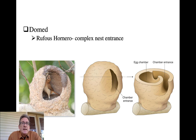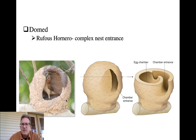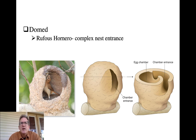The rufus hornero, another South American ovenbird, produces extravagant clay dome nests. Rather than a retort, it uses a vestibule with a curvature that limits the ability of a predator like a coati, raccoon, or bird to reach its hand or bill into the nest chamber to access the nestlings.